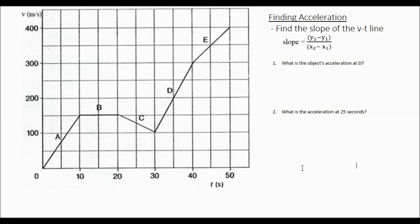Finding acceleration with a velocity time graph is simply a matter of finding the slope of the velocity time line at the particular point you want.